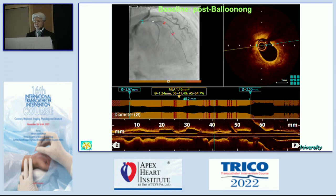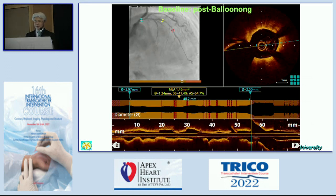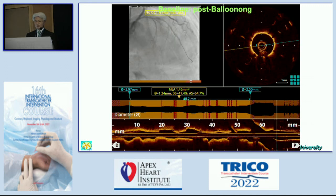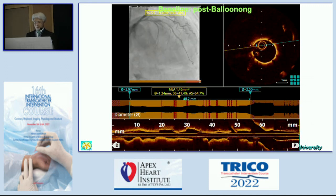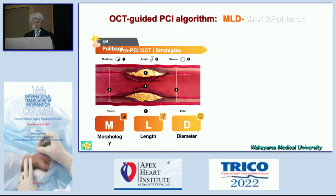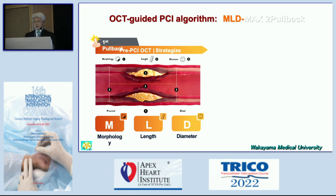Here we have lots of masters and experts of OCT imaging, so it's quite easy to understand — only one pullback. But it might be very difficult for the beginner. Therefore, I try to explain in detail. When you do the stenting, there is a very important algorithm at the moment: MLD MAX. The initial M means morphology, and there is length and diameter. So pre-stenting, it is important to identify morphology, length, and diameter.